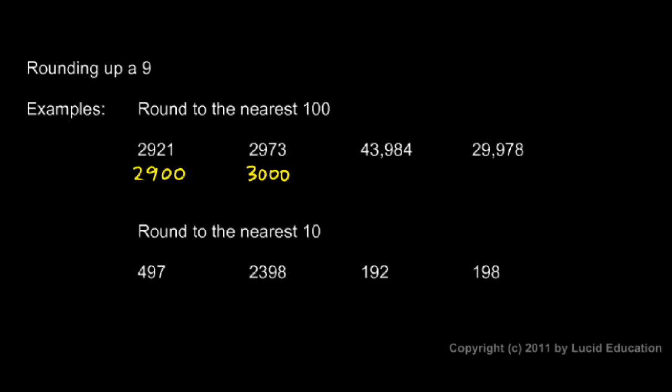That's 5 or higher, so we round up. So instead of 43,984, we end up rounding up to the next highest hundred, which turns out is an even thousand, 44,000.